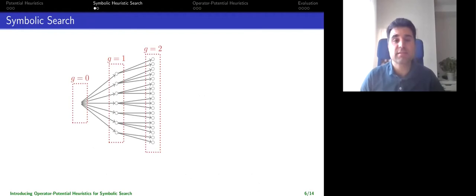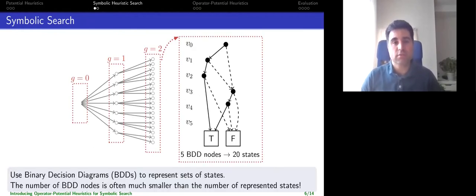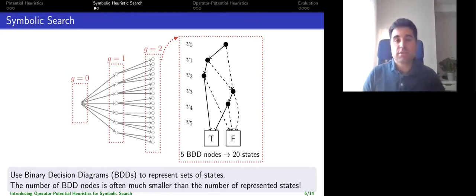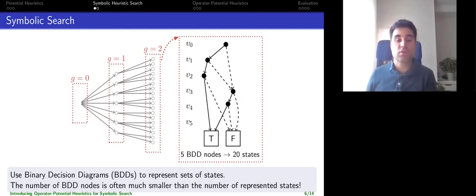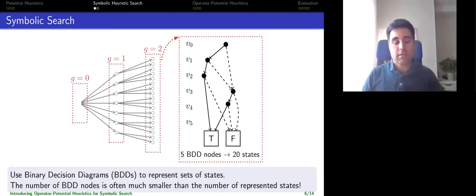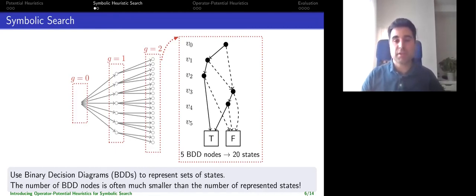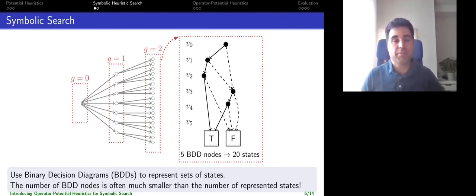For each set of states we use an efficient data structure — a binary decision diagram (BDD) — as shown in the figure. With a very compact structure having just a few nodes (e.g., 5 BDD nodes) we can represent many states (e.g., 20 states), and in general exponentially many states compactly. All search operations such as generating successors have runtime depending only on the number of BDD nodes, not the number of states represented.